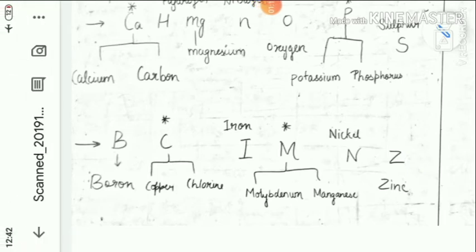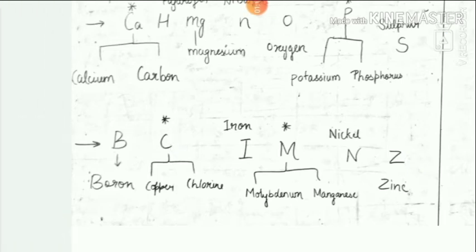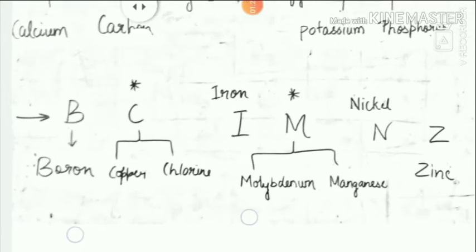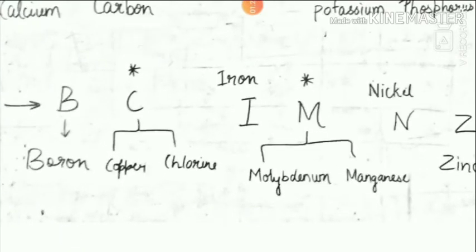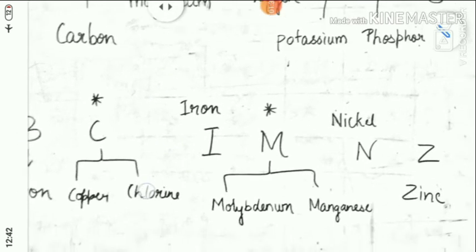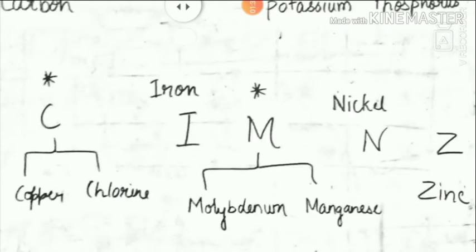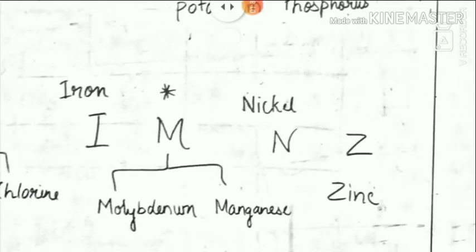So B for boron, C for, yeh do elements hai, copper and chlorine. Copper: C O P P E R, chlorine: C H L O R I N E. Isko humne C A likh ke rakh diya. I for iron ho ga, M for molybdenum and manganese, N for nickel, and Z for zinc.